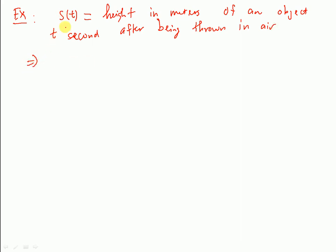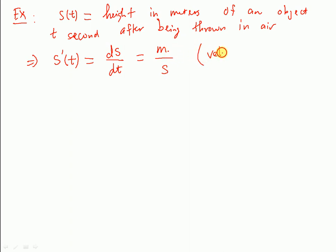The derivative function for s is represented by s prime of t, or ds over dt, because we are taking the derivative of the function s with respect to time t. So t stays at the bottom. This is the rate of change of this function with respect to time, or the change in meters per second — which represents the velocity or speed of the object.